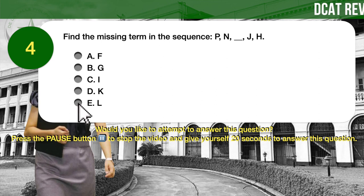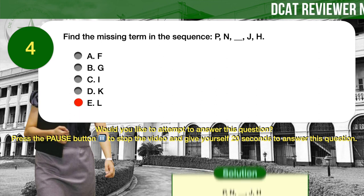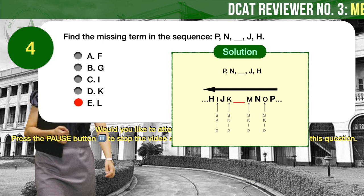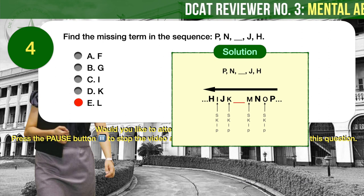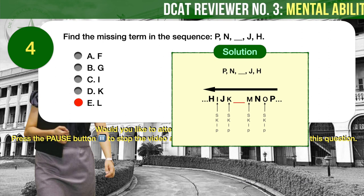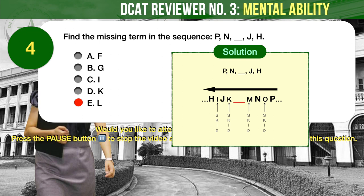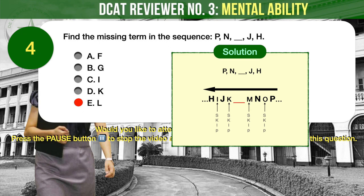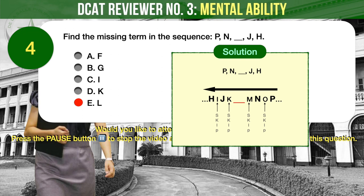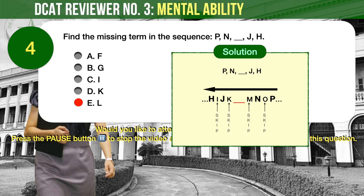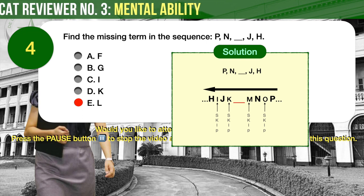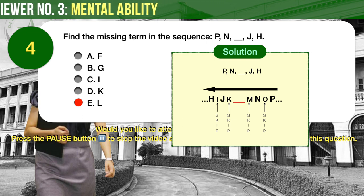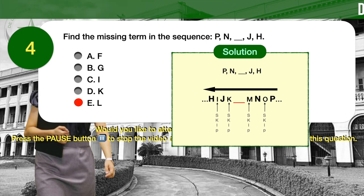The correct answer is E, letter L. To complete the letter sequence, simply skip one letter backwards in the alphabet starting from P: P, skip O, N, skip M, blank, skip K, J, skip I, H. Therefore, the missing letter in the sequence is L.